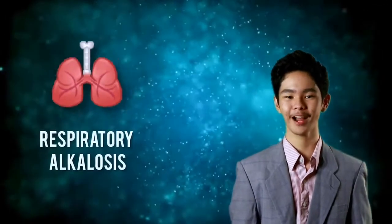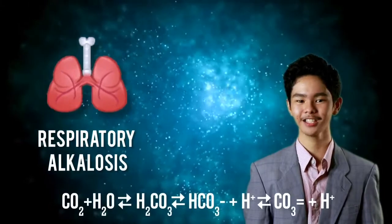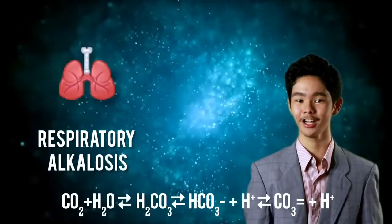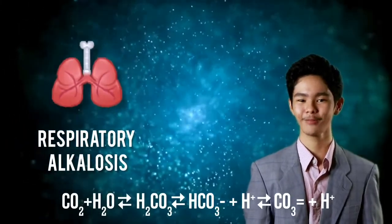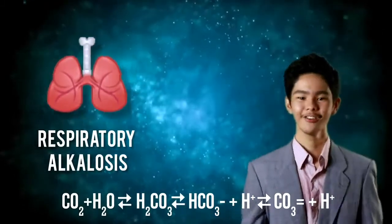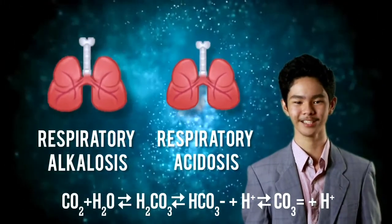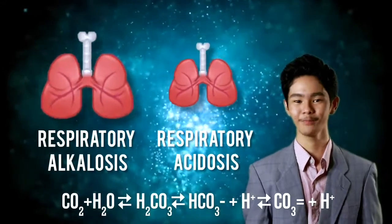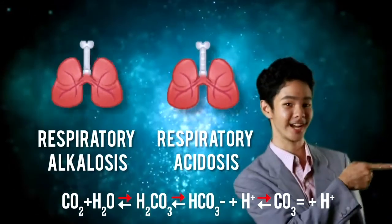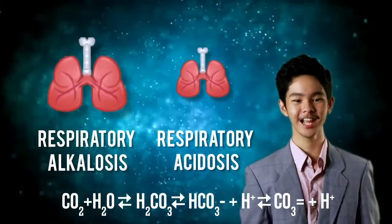Have you seen a person hyperventilating? It is also known as respiratory alkalosis. The carbon dioxide concentration in the blood is reduced and the bicarbonate equilibrium shifts to the left. Respiratory acidosis is caused by the reverse process. This causes the equilibrium to shift to the right. The hydronium concentration increases and the pH drops.